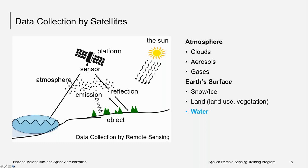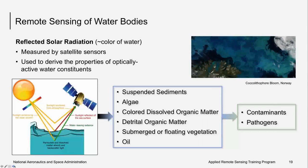Satellite measurements can be used to infer characteristics of several Earth system spheres. Depending on the type of sensor and which part of the electromagnetic spectrum is used, information can be gained about the atmosphere — including clouds, aerosols, and gases — as well as the Earth's surface, including snow and ice, land vegetation, and water. The remote sensing of water bodies is used to derive the properties of optically active water constituents, including suspended sediments, algae like coccolithophores, and colored dissolved organic matter.